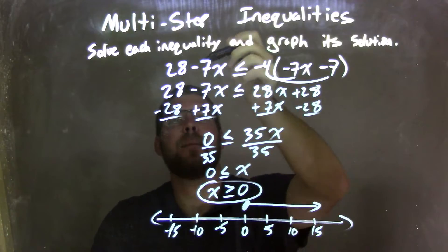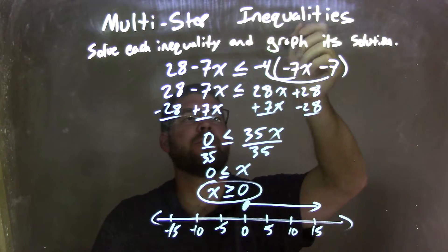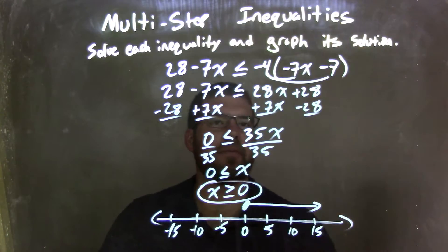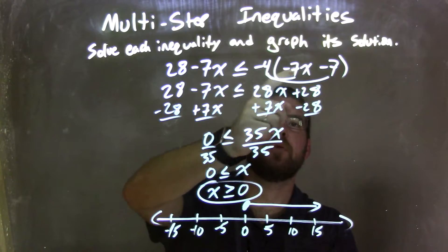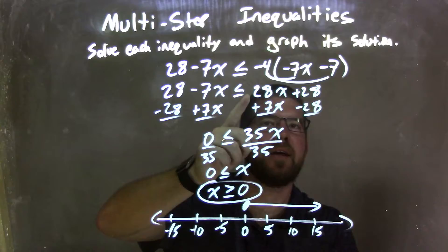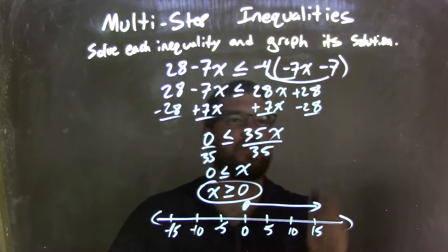So let's recap. We're given 28 minus 7x is less than or equal to negative 4 parentheses, negative 7x minus 7. I distribute the negative 4 across, giving me 28x here. Negative 4 times negative 7 is a positive 28x. And negative 4 times negative 7 is a positive 28.